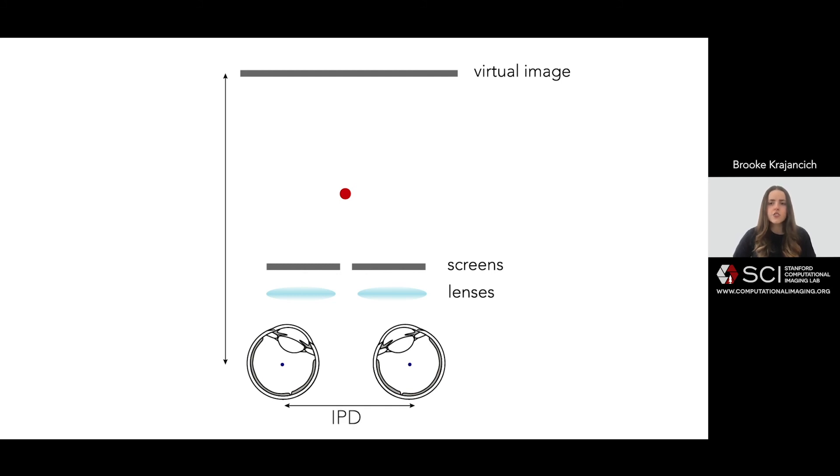in the form of matrices, to essentially trace out a line between that position and the centers of each of the eyes. The points in which these rays intersect the screens tells us the pixel coordinates to light up on each display, such that the light that lands on the retina gives us the perception of a point at that depth.